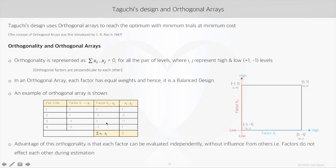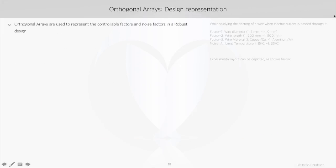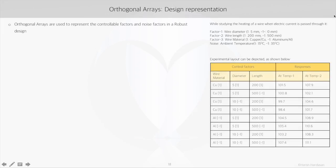Now the main advantage of this orthogonality is that each factor can be evaluated independently without the influence of other factors. So orthogonal arrays help us to represent the controllable factors and the noise factors in an experimentation layout.